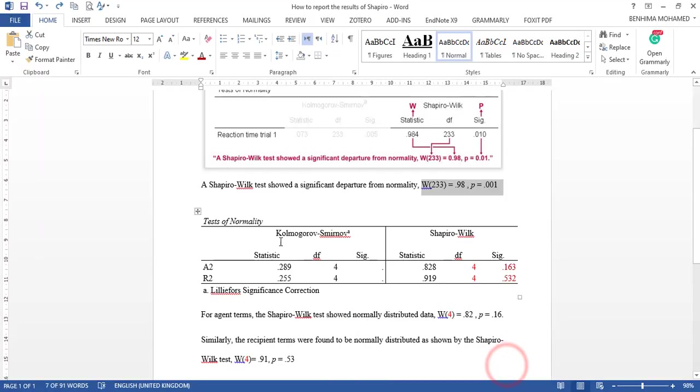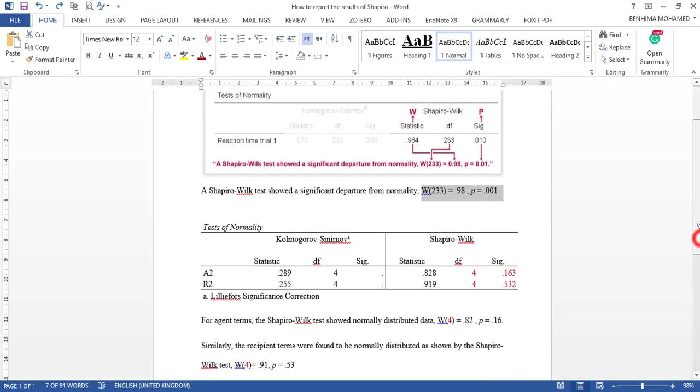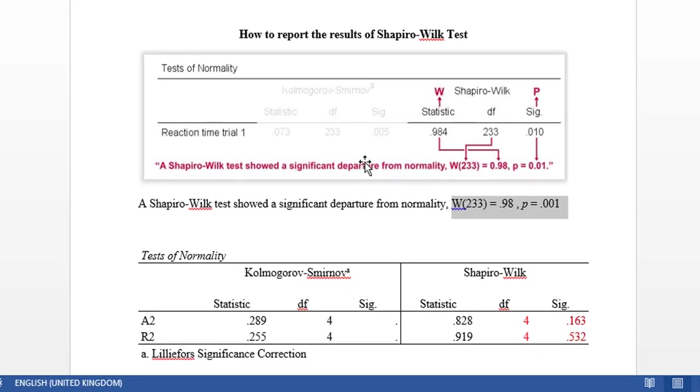So I already have one to show you to illustrate this. So I will write the report this way. For example, Shapiro-Wilk test showed significant departure from normality. I am going to explain this formula.